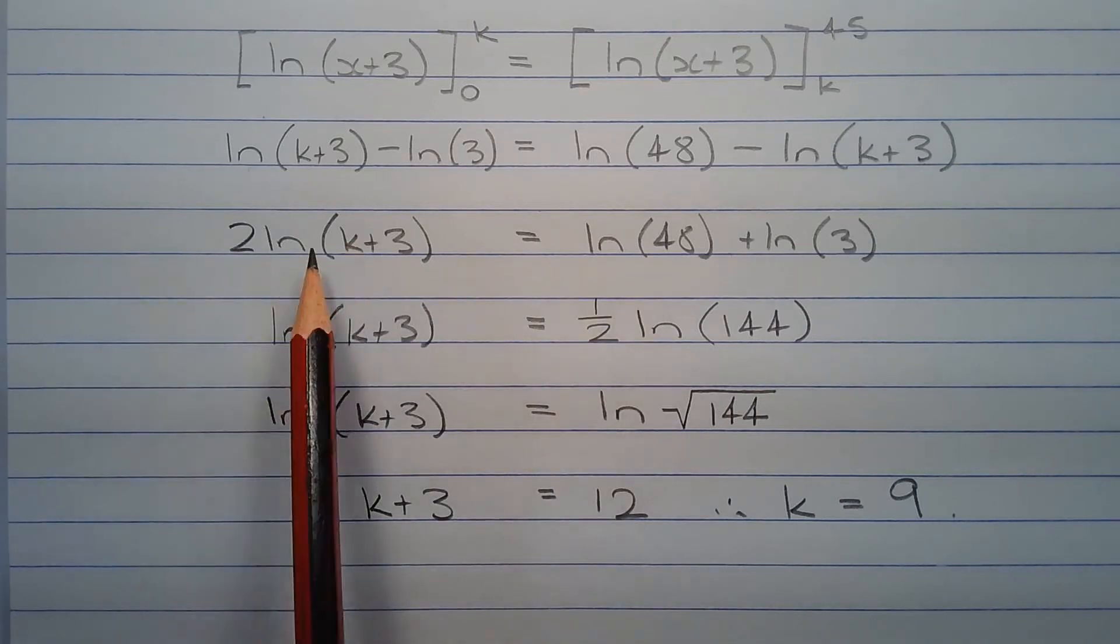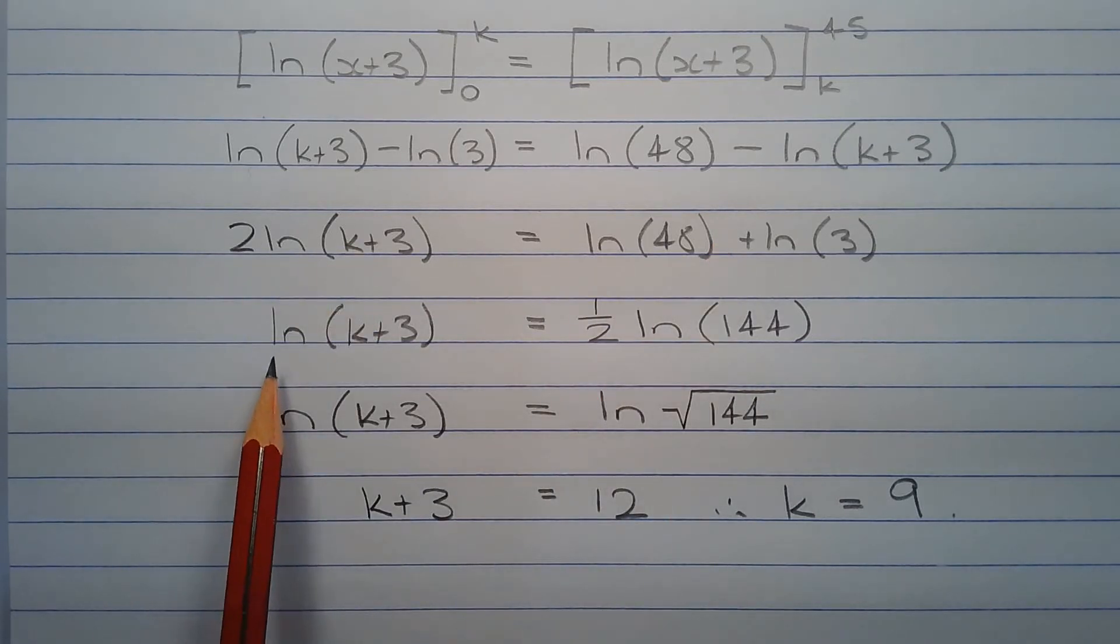Dividing both sides of this equation by 2 we end up with ln of k plus 3 is equal to half times ln of 144.